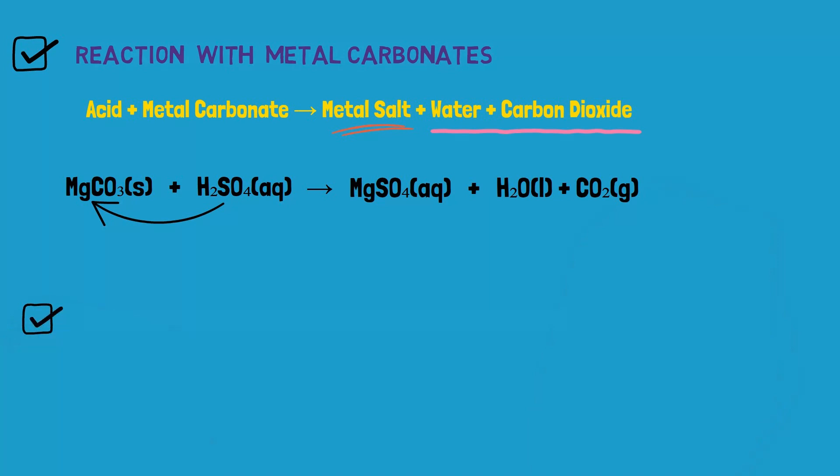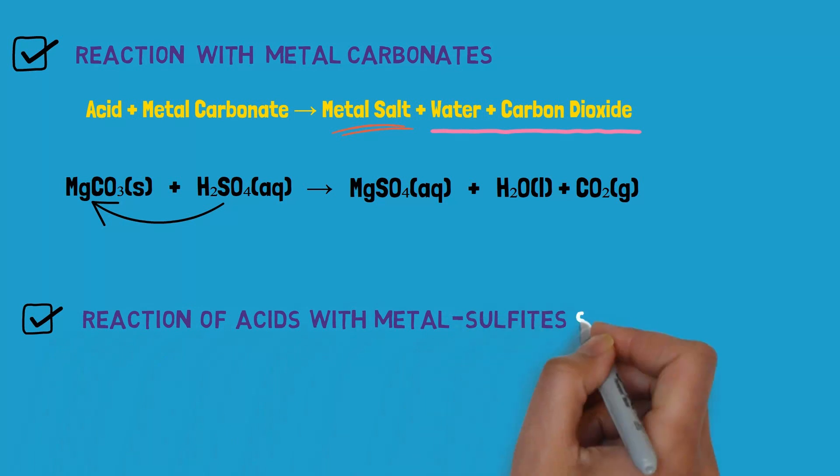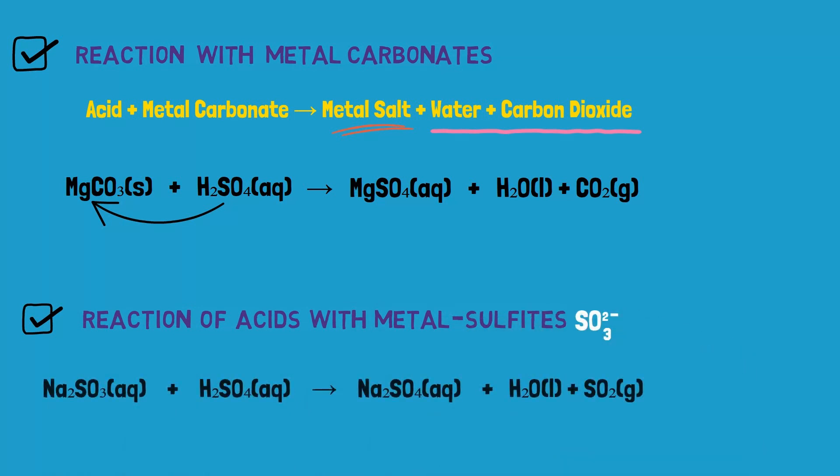Number 3. Reaction of acids with sulfites. When metal sulfites, like sodium sulfite, react with dilute sulfuric acid, they produce salt, Na2SO4 which is sodium sulfate, sulfur dioxide, and water.